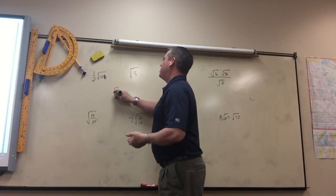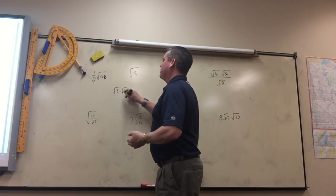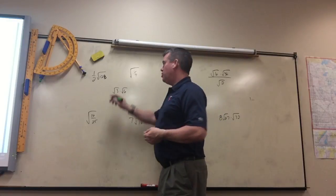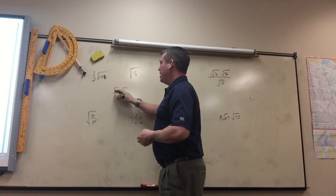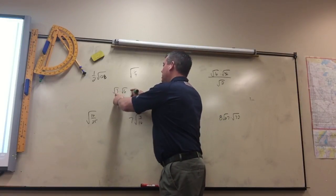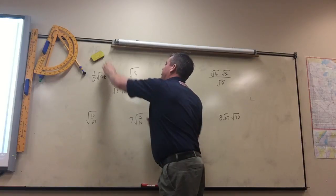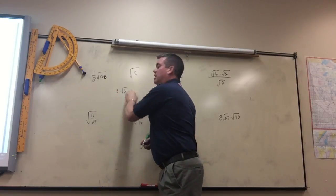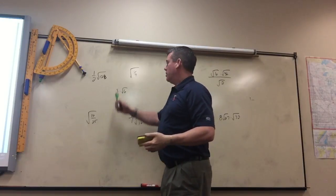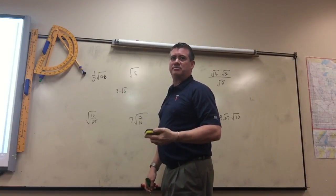Remember, if two numbers are underneath the radical sign, you can multiply them. As long as they're both underneath, this would be the square root of 18. If one of them is not, it just stays like that. Three times the square root of six.